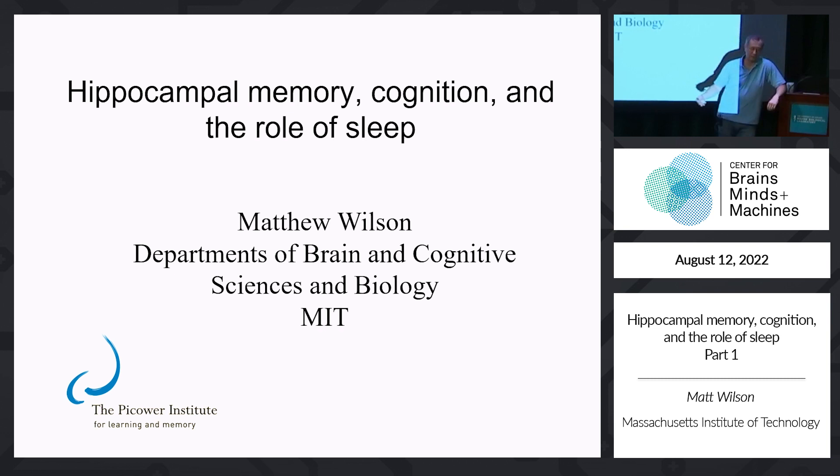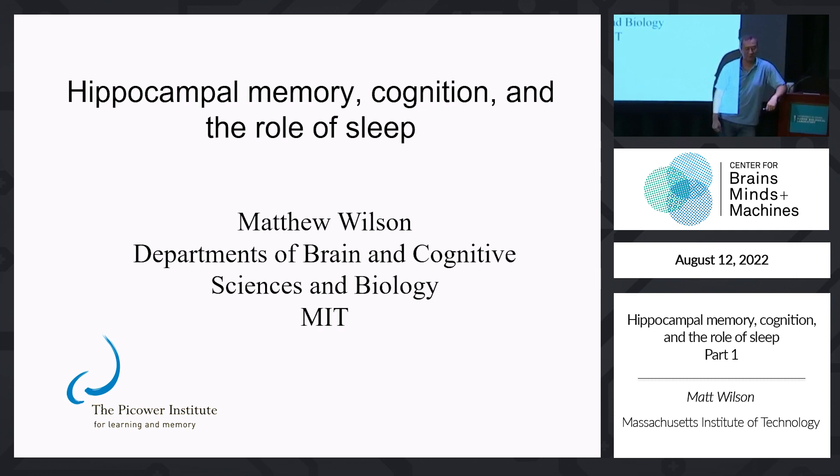One thing about brain systems is that their time constants have always been leveraged as a weakness. When you look at the time constants associated with brain computation, they tend to be relatively slow. Discrete digital computation operates at megahertz or gigahertz, while brain systems operate at the time scale of hertz—it's sort of like a tortoise and hare issue.